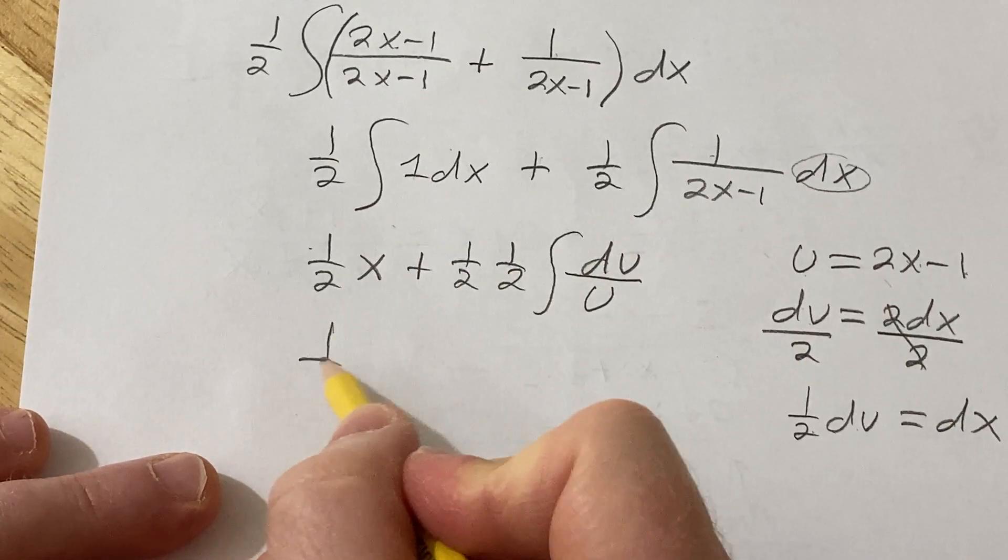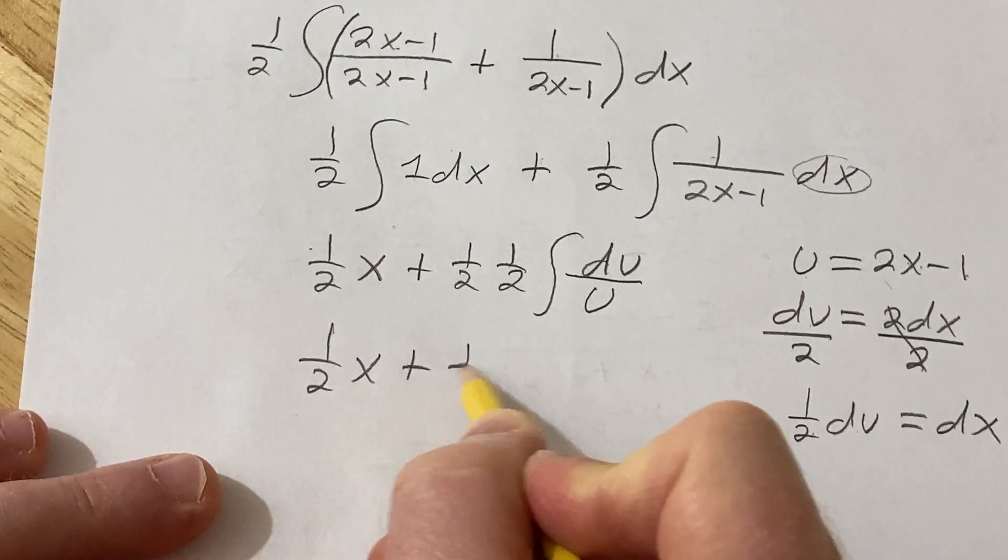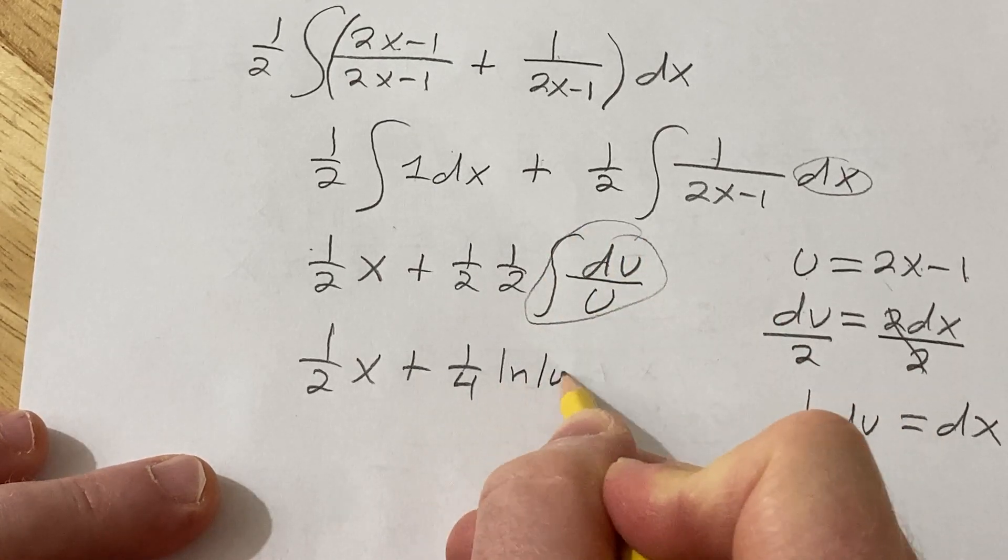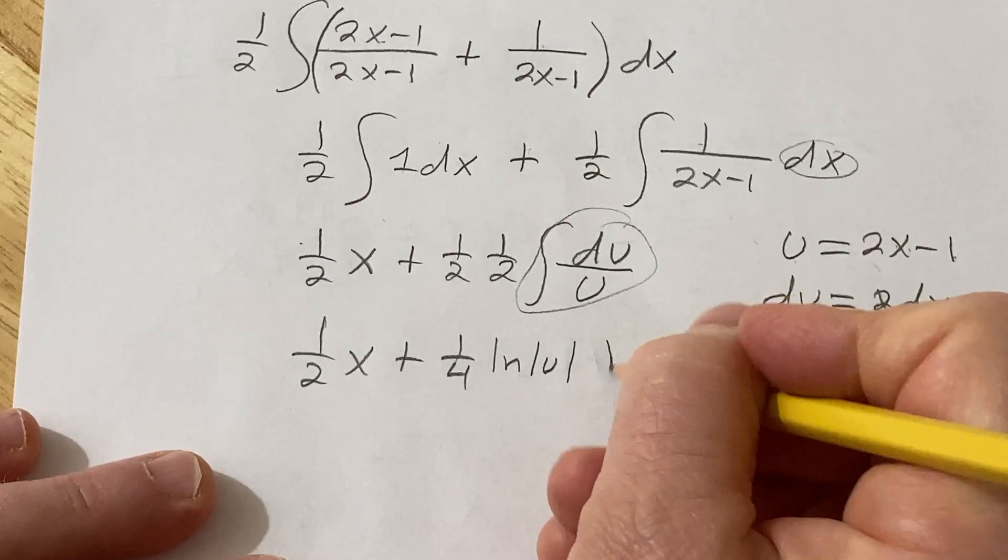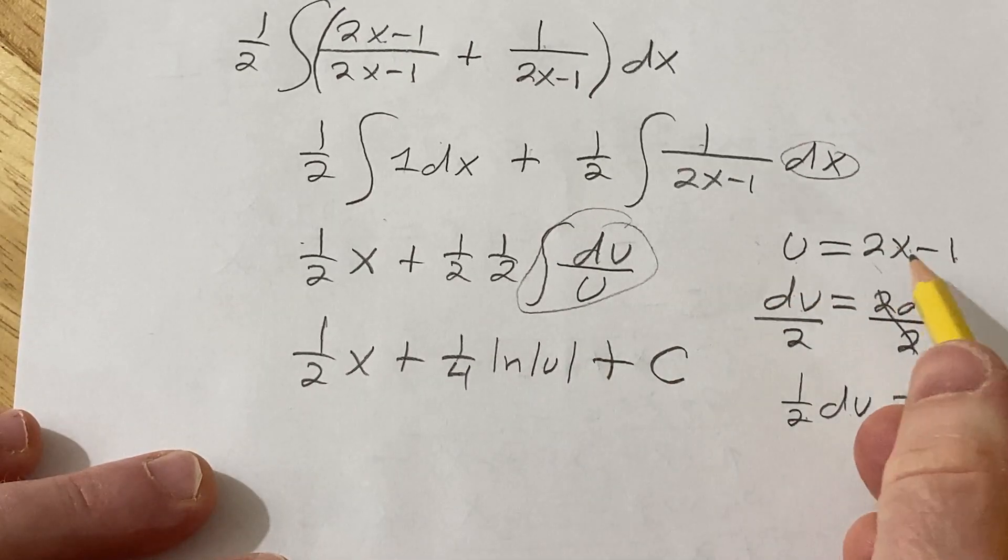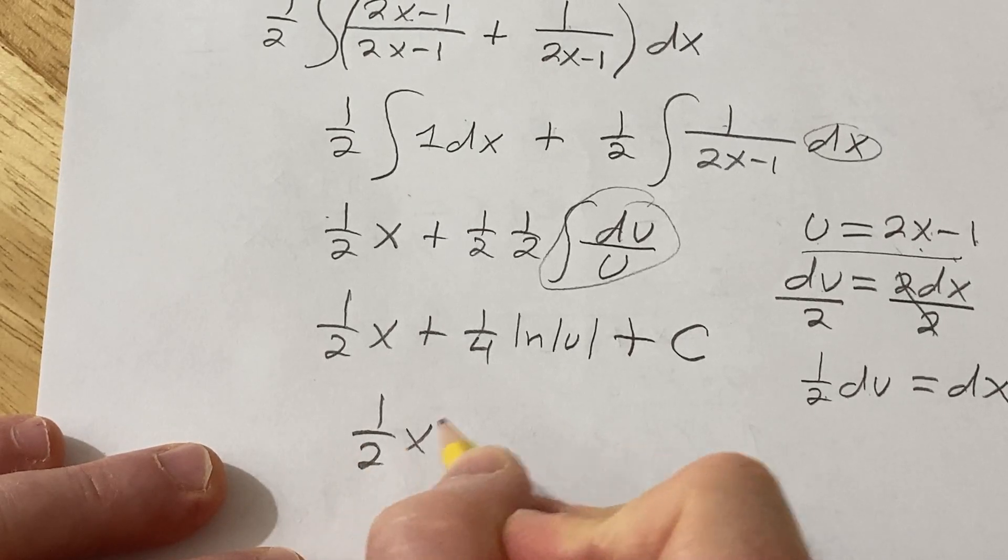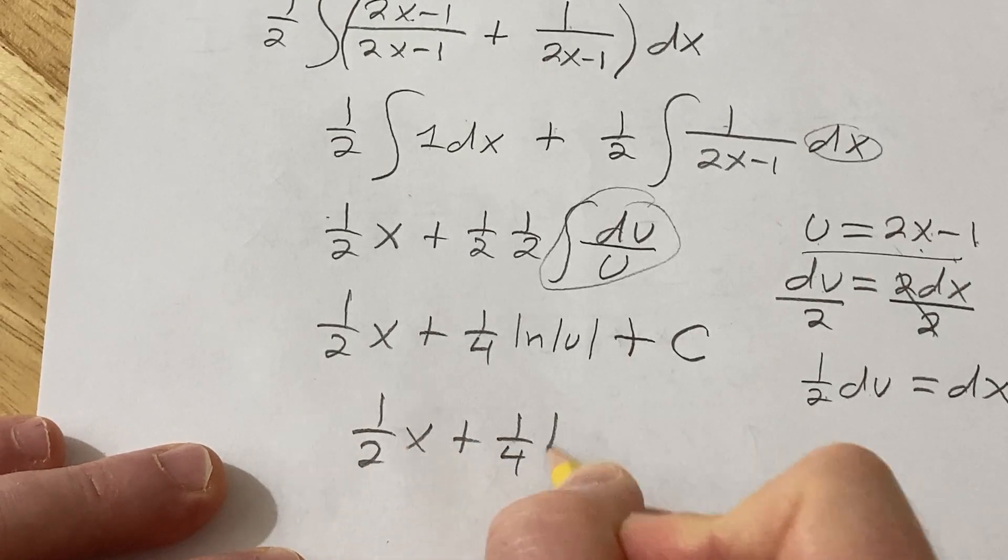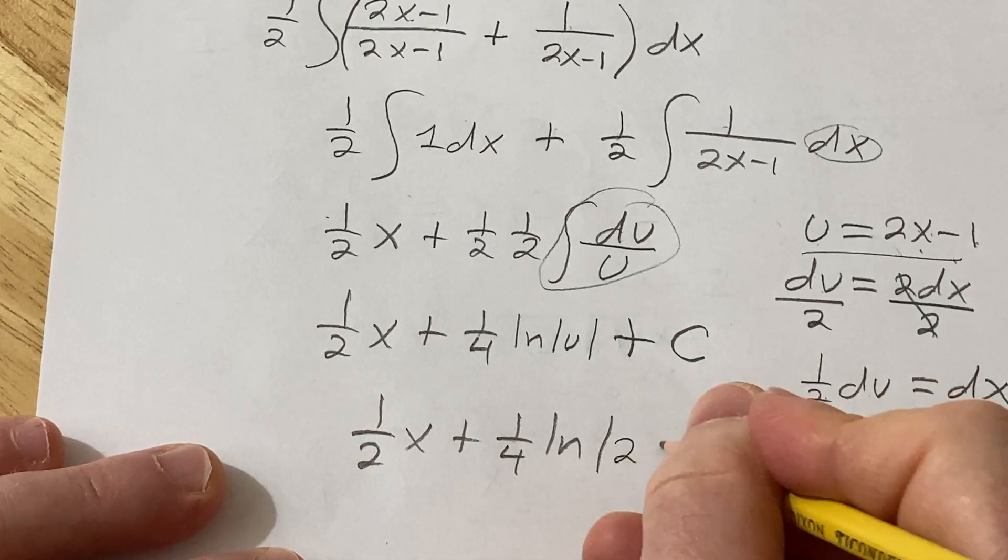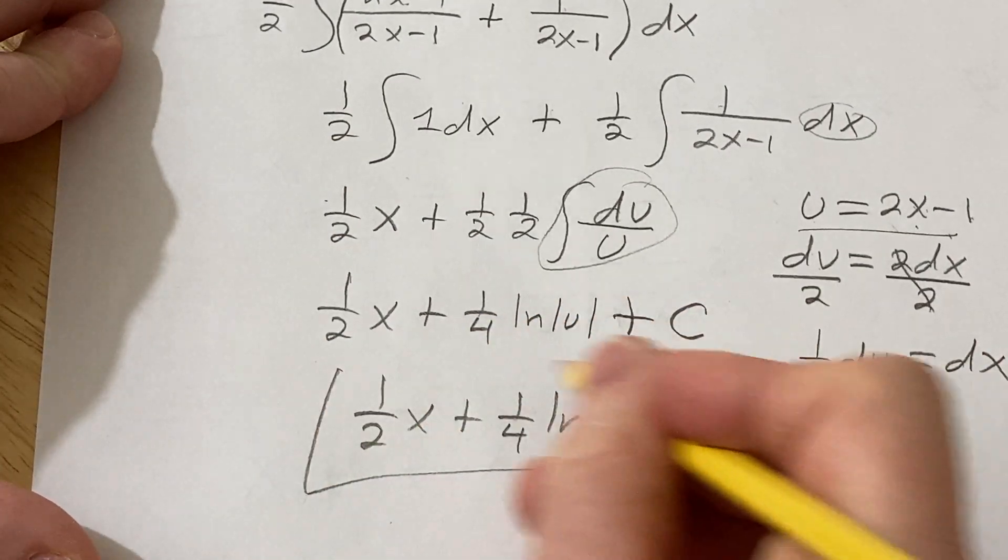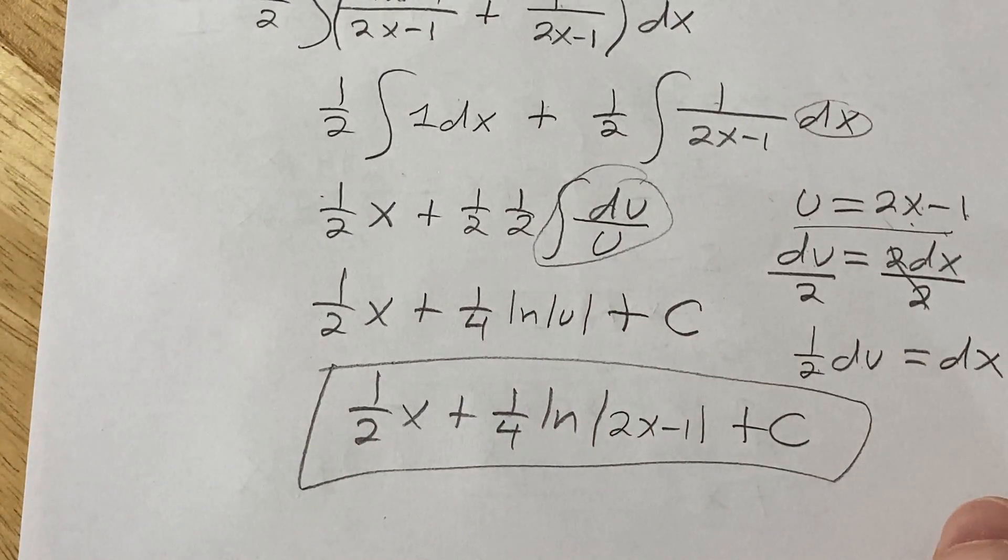So this is 1 half x plus 1 fourth. This is a special formula. It's equal to the natural log of the absolute value of u. Let's go ahead and add our constant of integration now. We know what u is. It's 2x minus 1. So this is 1 half x plus 1 fourth natural log of absolute value of 2x minus 1. And then we have our constant of integration, capital C. And so that would be the answer to this problem.